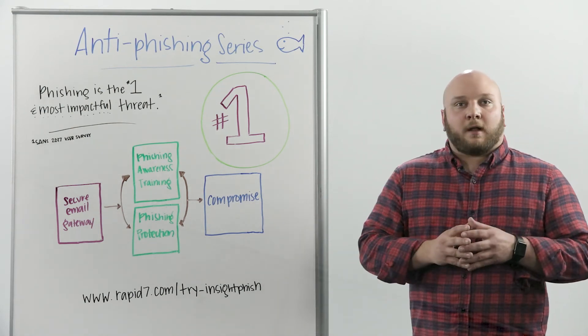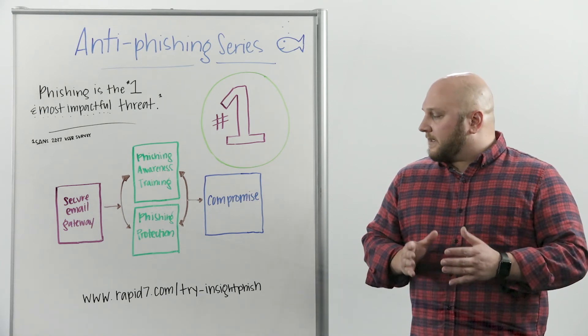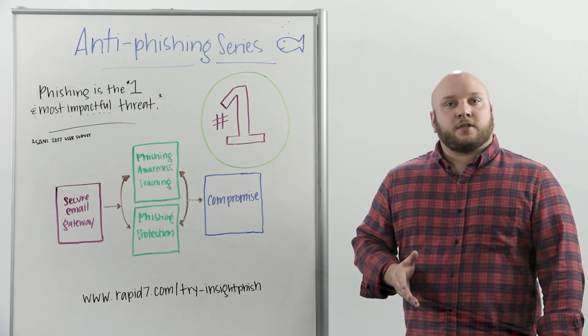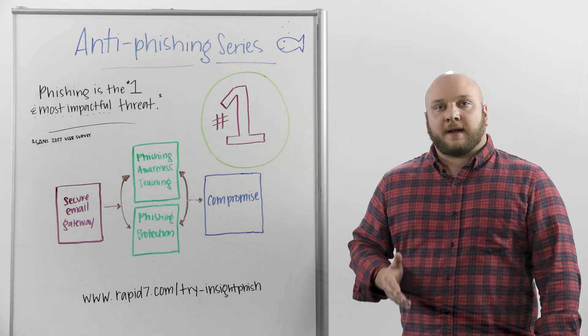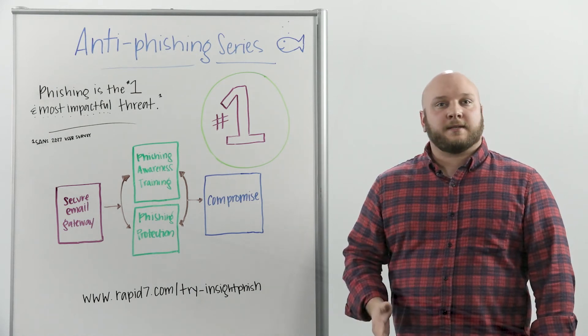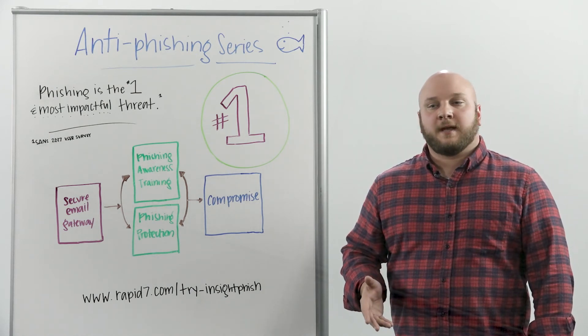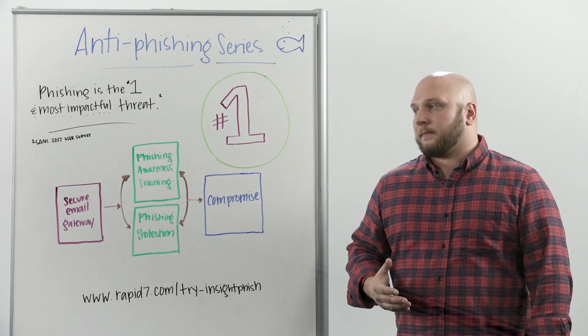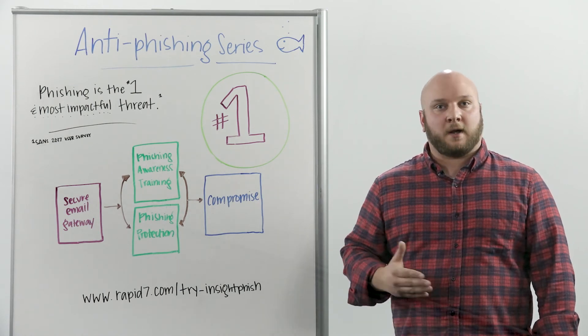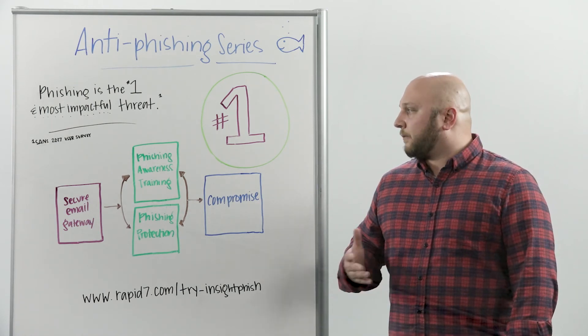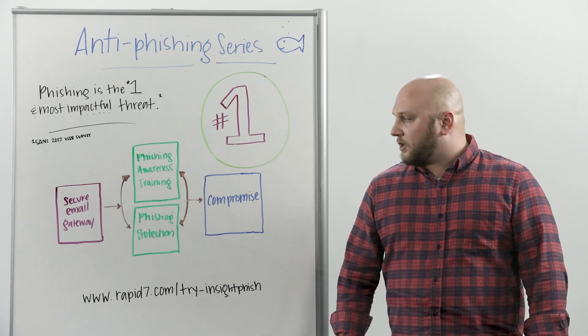And then finally, even with all of our best laid plans and this defense in depth, phishing messages will still get through and compromise will still happen. And when it does, we need to have technology in place that can let us know that we've been compromised as early in the attack chain as possible, and we need to implement appropriate incident response plans to take care of that issue.